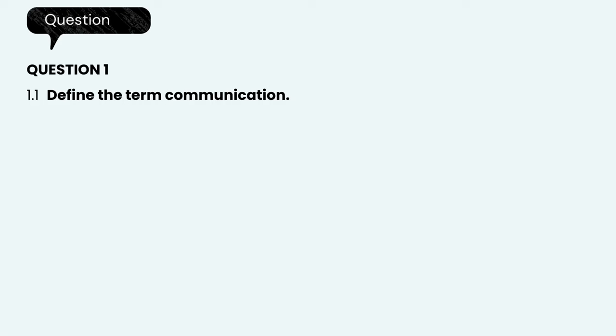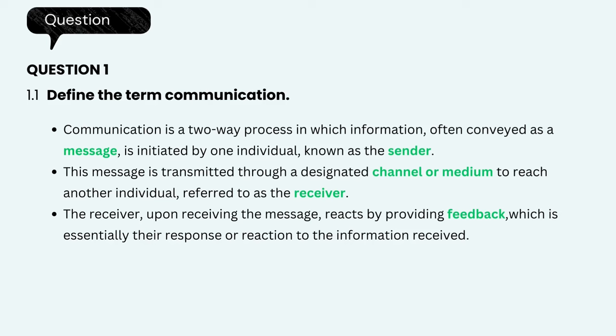Question 1. Define the term communication. Communication is a two-way process in which information, often conveyed as a message, is initiated by one individual known as the sender. This message is transmitted through a designated channel or medium to reach another individual, referred to as the receiver. The receiver, upon receiving the message, reacts by providing feedback, which is acknowledged as their response or reaction to the information received.